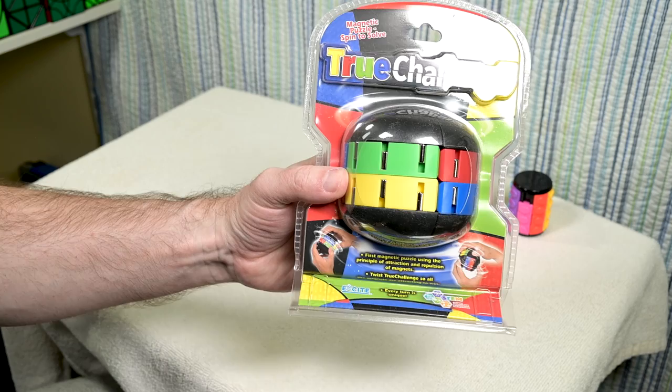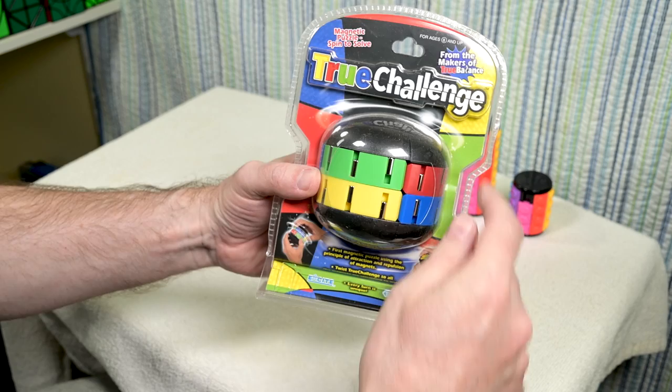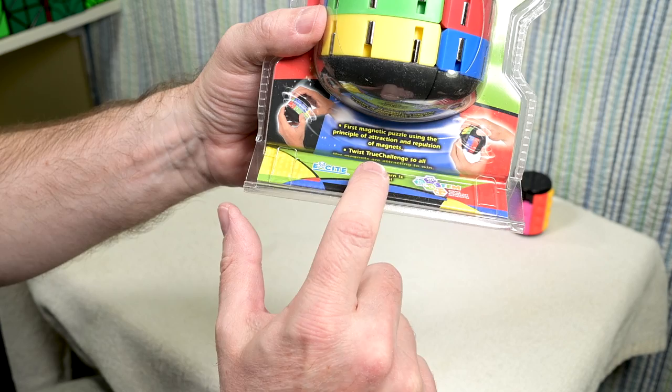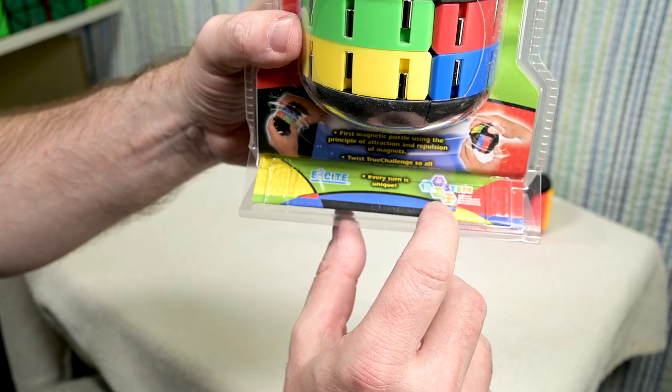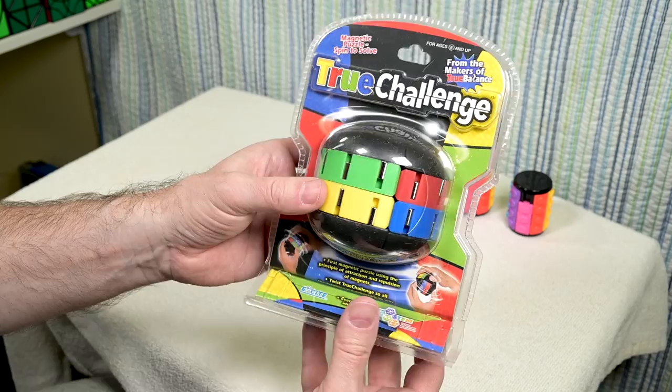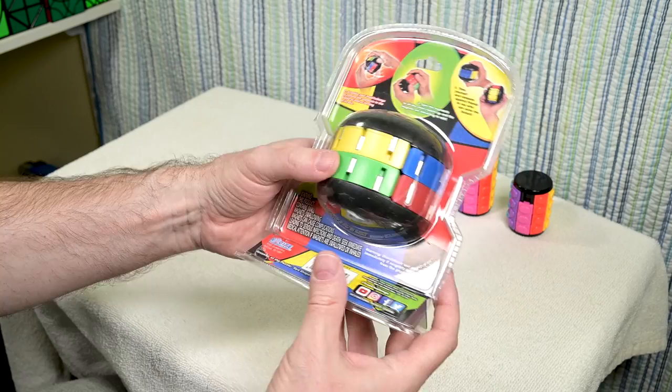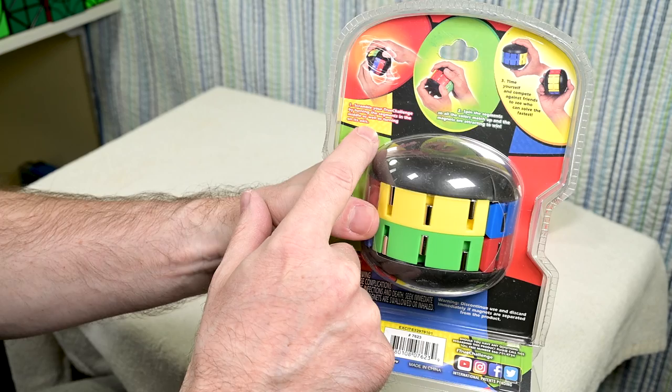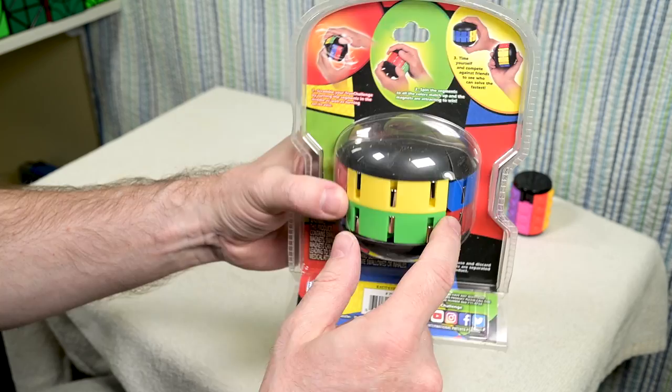Okay. So this is the other one I got and really, okay. And some paperwork, which we'll look at later. And there we go. So that's it. Empty box. And there's the puzzle. There we are. So this is called the true challenge. And it says magnetic puzzle spin to solve. And it says from the makers of true balance. So it says the first magnetic puzzle using a principle of attraction repulsion of magnets. Every turn is unique. And then it says a little STEM logo on there, science, technology, engineering, mathematics. I don't know. It's very popular. I've noticed when I go into toy stores to slap STEM on stuff. You know, I don't know, unless there's an actual scientific principle you're going to learn from this. I would take that with a grain of salt.